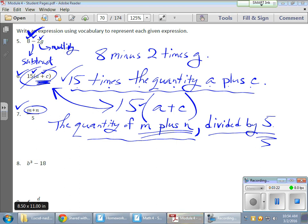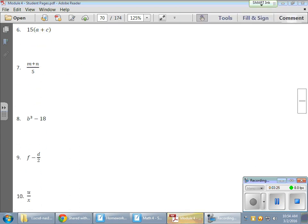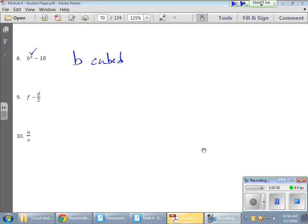Number 8 is interesting because now we're jumping into some exponent stuff. As far as exponents are concerned, since we're talking about a power of three, we can use the word cubed. So I could have b cubed minus 18 like this.